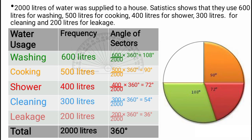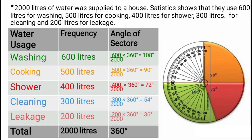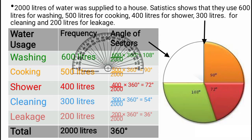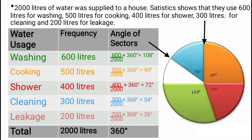For cleaning, which is 54 degrees: mark zero and 54 degrees from the last line, then take it from the center. And the last one — leakage. Because it's the last sector, we do not need to measure. The remaining portion will obviously be 36 degrees, so we just mark it out from the center.